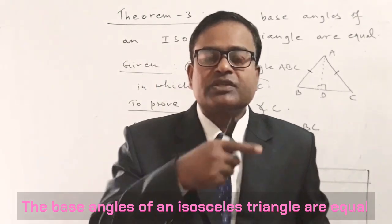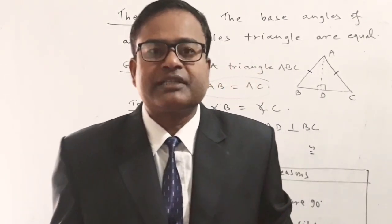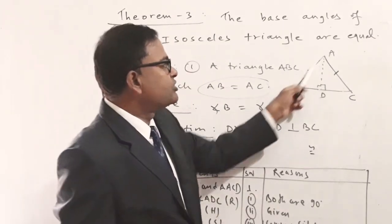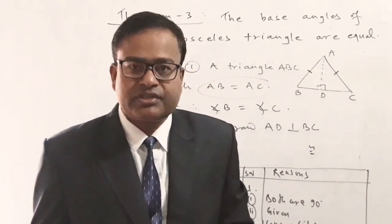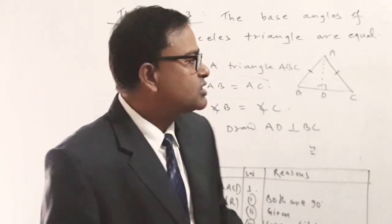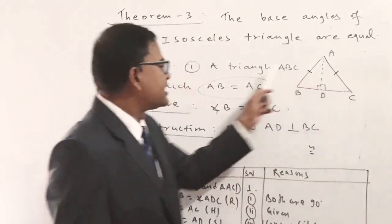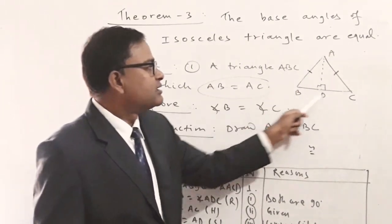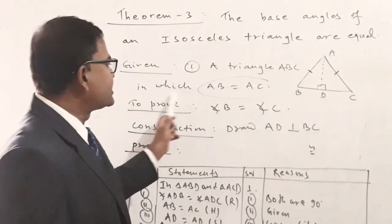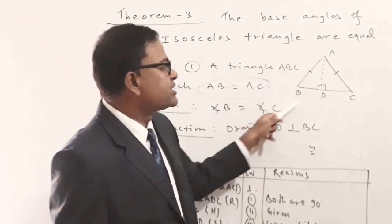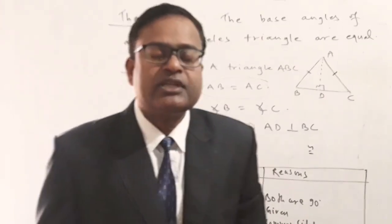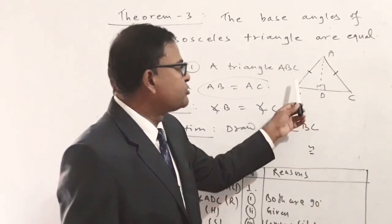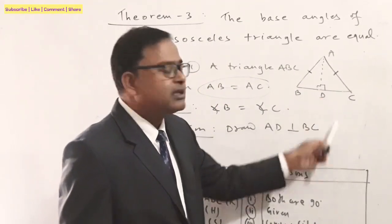In Theorem 3, we are given an isosceles triangle and we have to prove that the base angles are equal. First, we have to draw a triangle ABC, which I have already drawn to save time. Given: triangle ABC in which AB is equal to AC — the two sides AB and AC are equal.